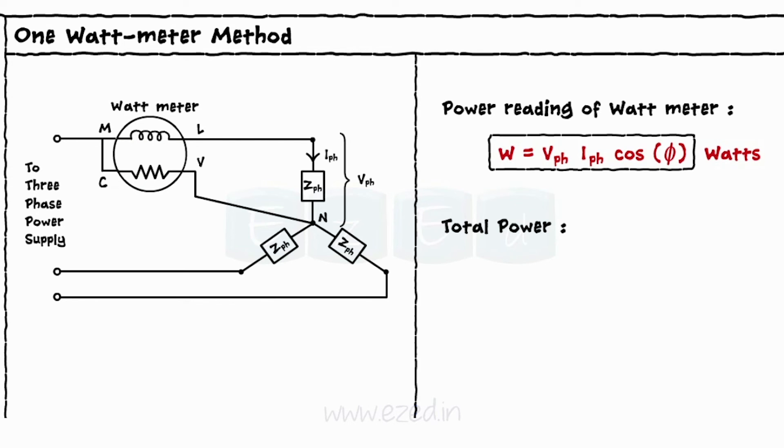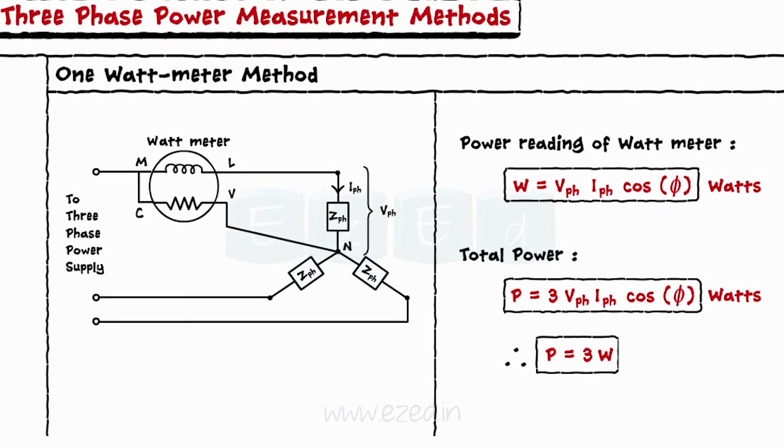The total power is given as P equals three times VPH IPH cos phi. Hence, the total power equals three times the wattmeter reading.